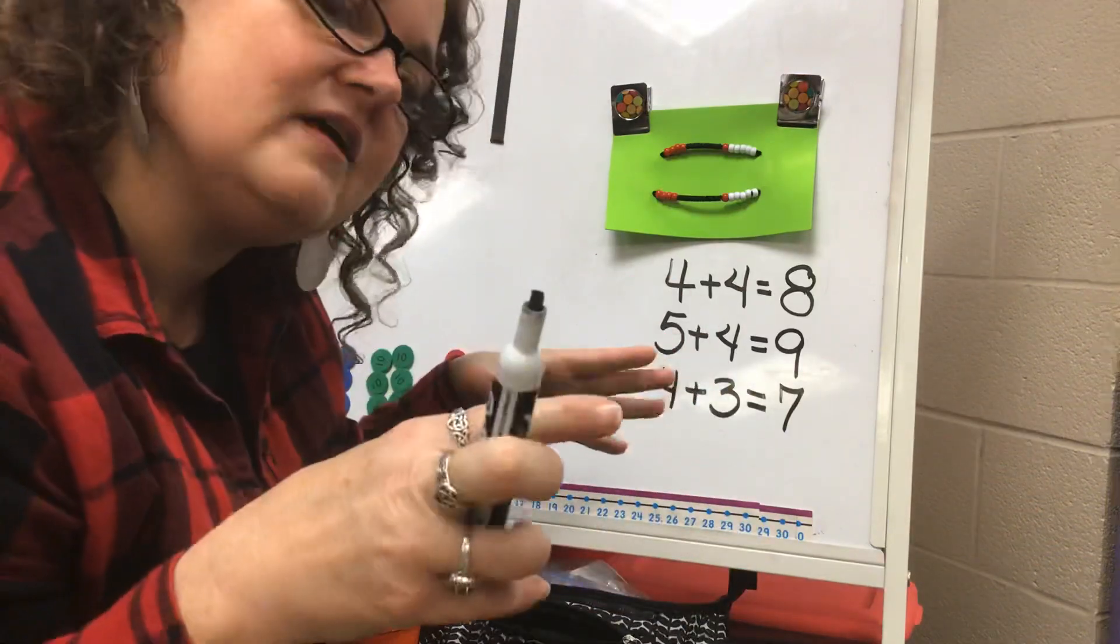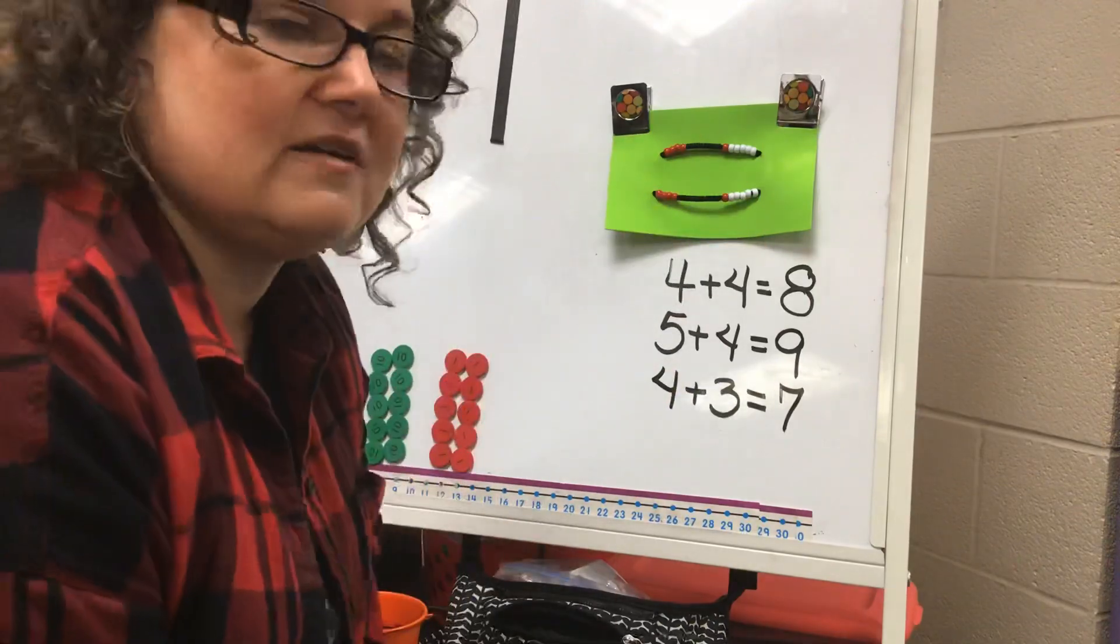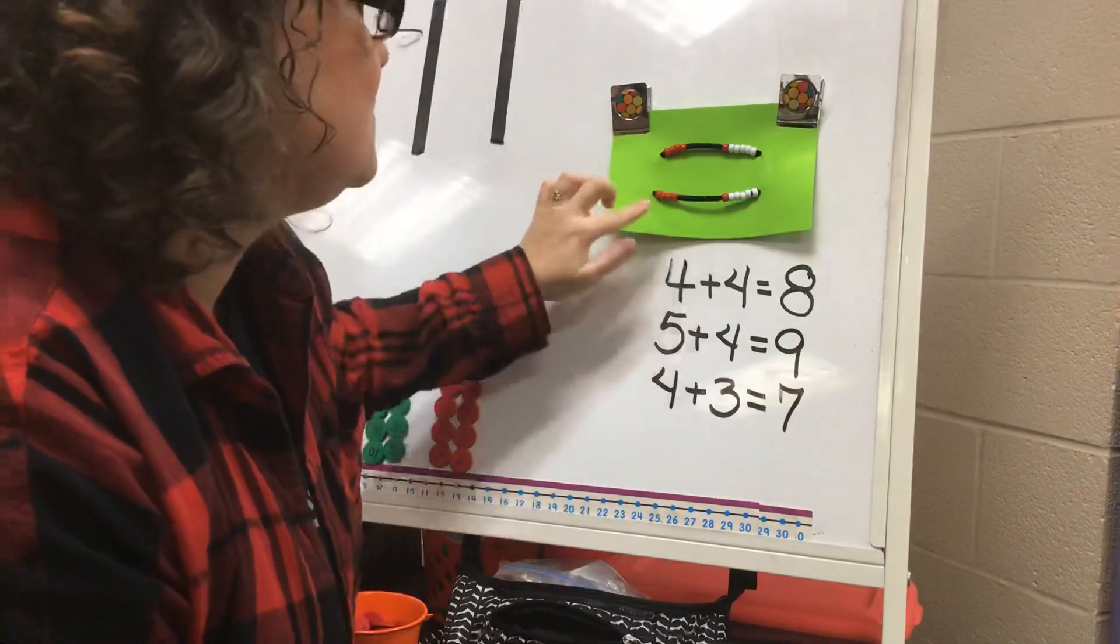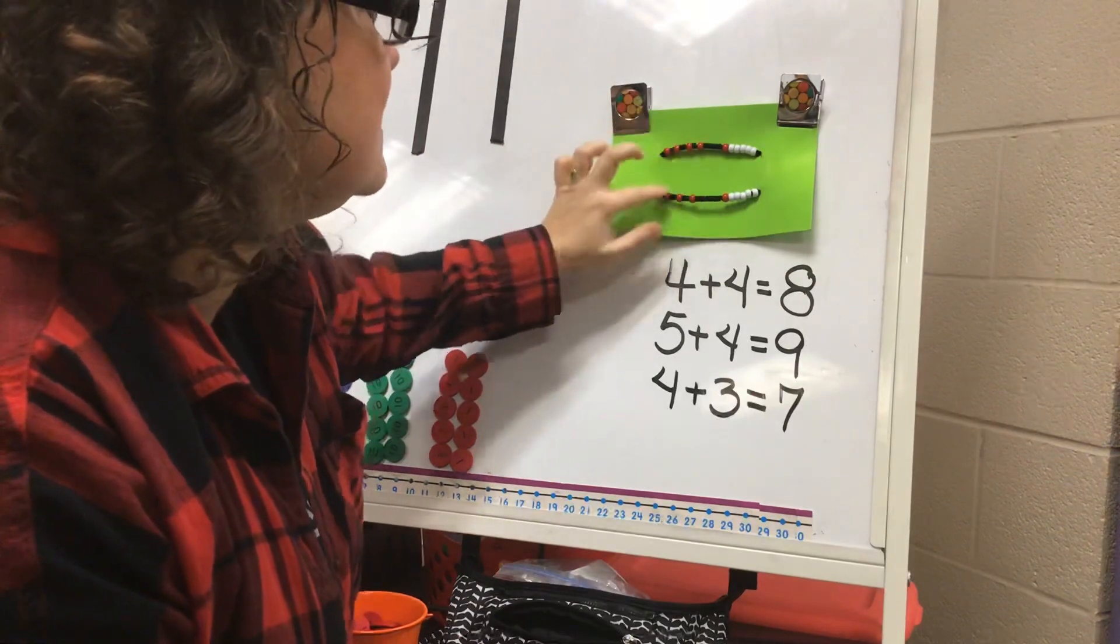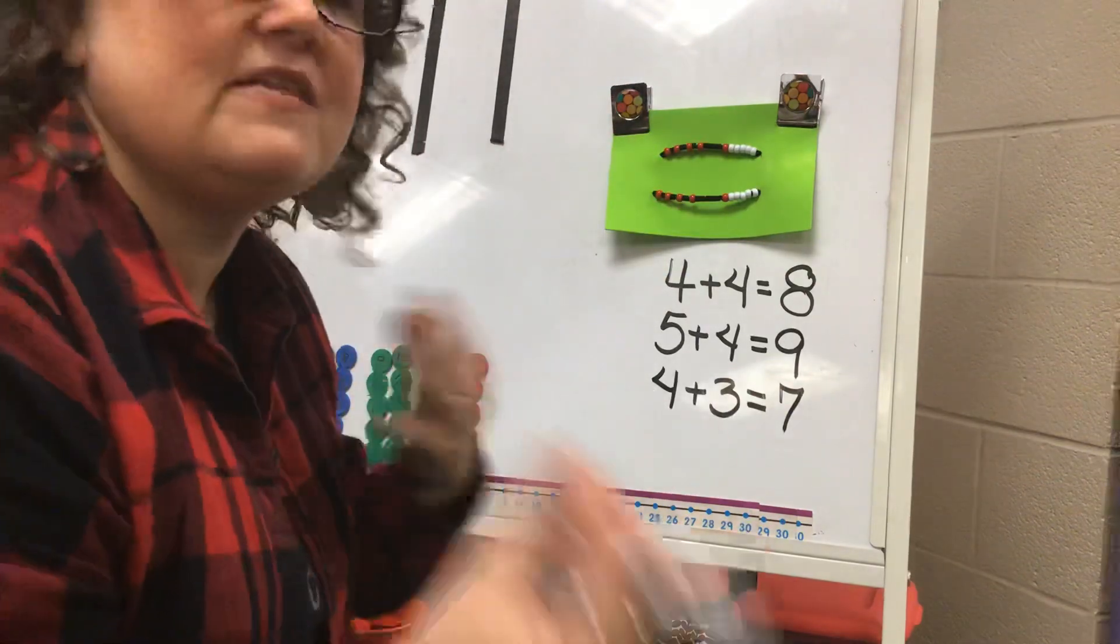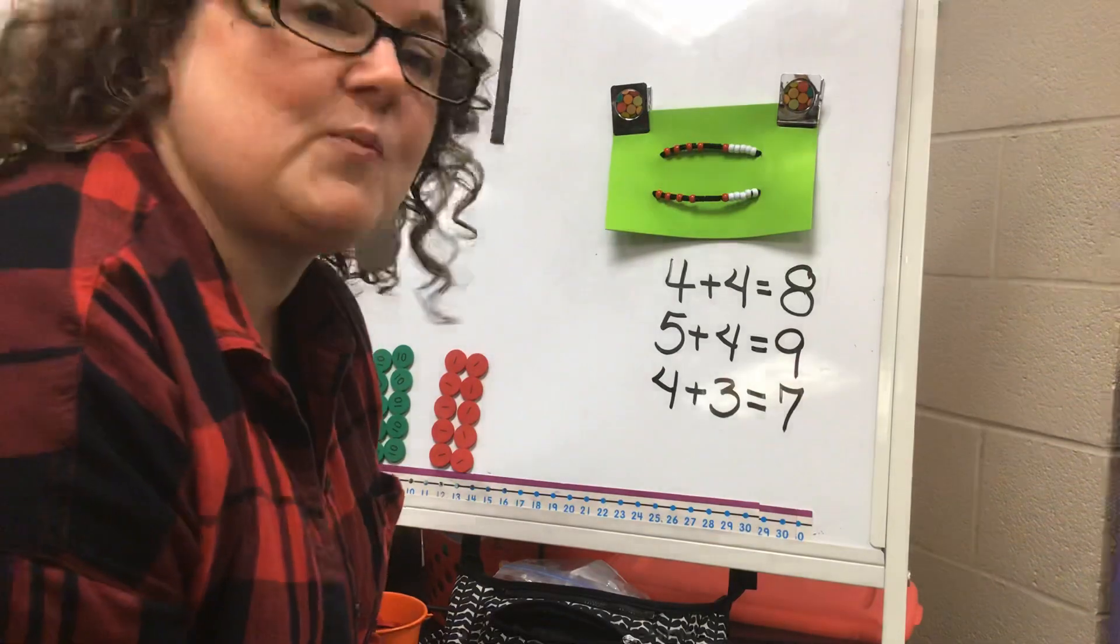I could do four marbles in an egg carton and four marbles on the other row of my egg carton, and then take one and add one more or one less. That's a great way to practice your doubles and your near doubles.